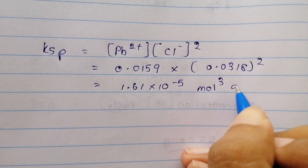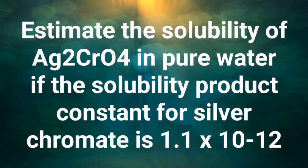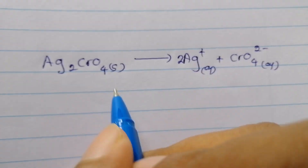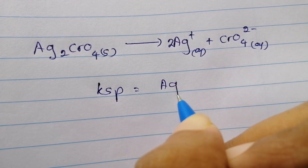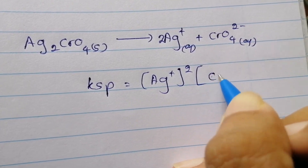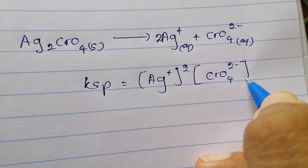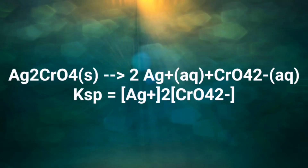Now let's calculate the Ksp value for a second compound: silver chromate. The Ksp value is 1.61 times 10 to the power of minus 5.